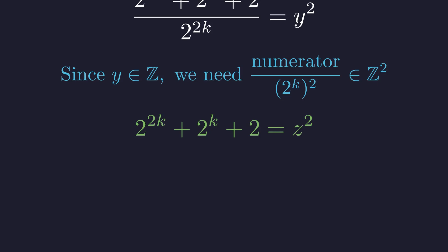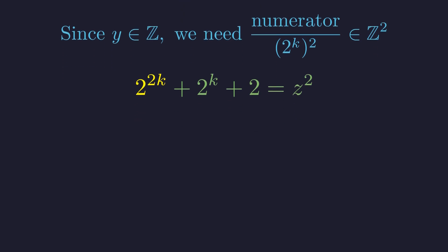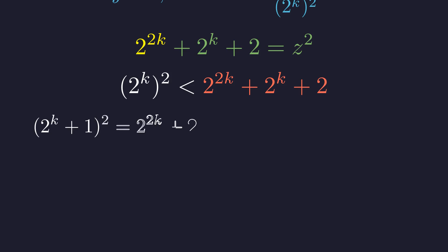Let's call this required perfect square z squared. The key insight now is to see where this expression lives in relation to other perfect squares. We know that 2 to the power of 2k is a perfect square. Our expression is clearly larger than that. So, z squared is greater than the square of 2 to the k. What about the next consecutive square? Let's compare our expression to the square of 2 to the k plus 1. Expanding this gives us 2 to the 2k, plus 2 to the k plus 1 plus 1.